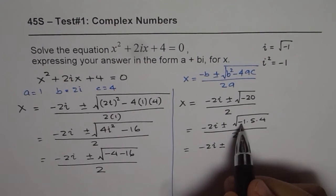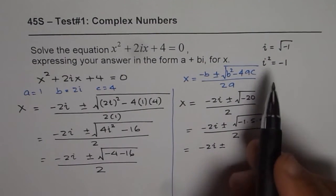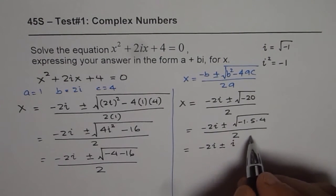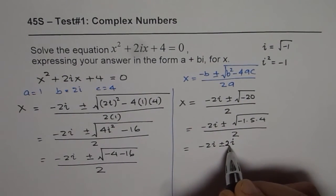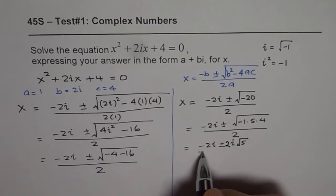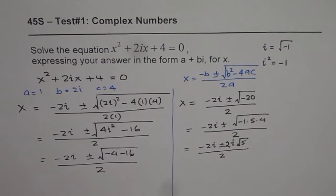Now what is square root of minus 1? Square root of minus 1 is i. So we get i here. What is square root of 4? Square root of 4 is 2. So let me write this as 2i, and we are left with square root of 5 inside.